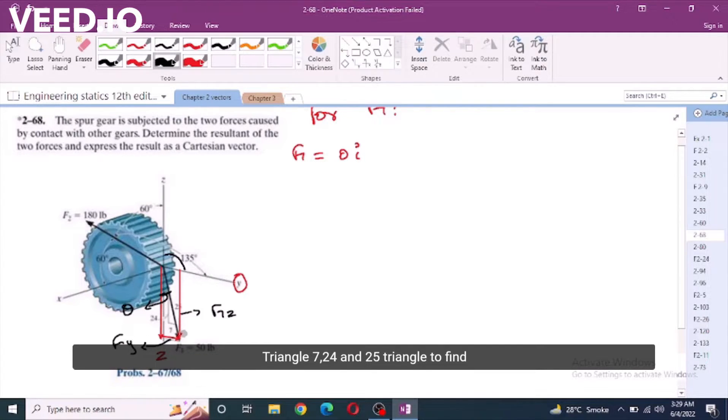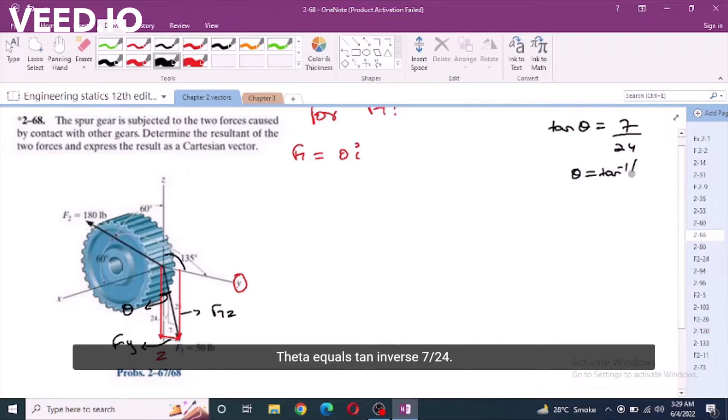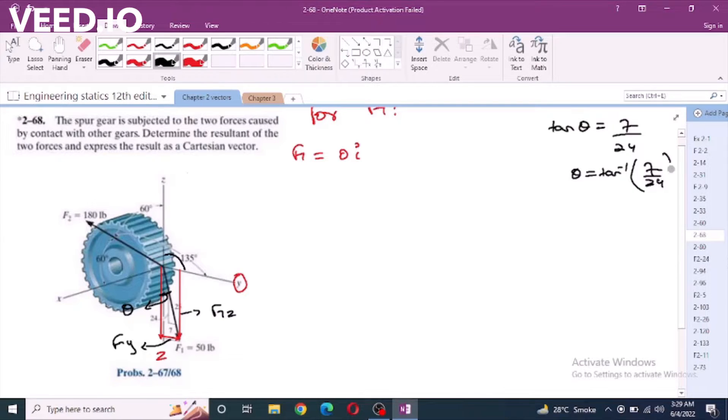To define theta, tangent theta equals 7 over 24. Theta equals tangent inverse 7 over 24. Theta equals 16.26 degrees.